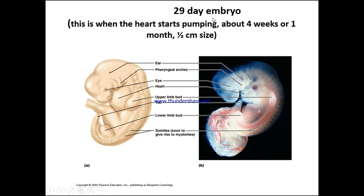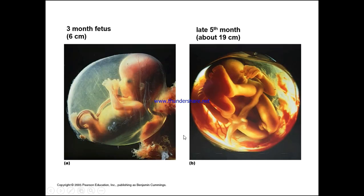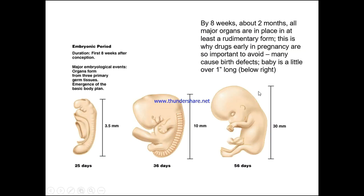At around 26 days — about four weeks or one month — the heart starts pumping; the embryo is around half a centimetre in size. You can start to see a human-like figure appearing, with an ear, pharyngeal arches, the eye, the heart, the upper limb bud, the tail, and the lower limb bud. The somite soon gives rise to the myotomes. By three months, around six centimetres, we have a far more human-looking configuration.